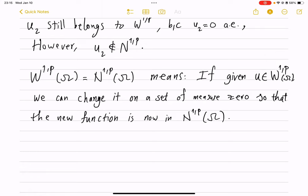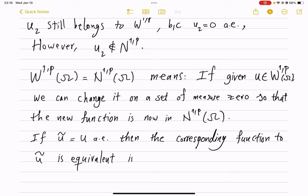And the answer to that is yes. So if u tilde is equal to u almost everywhere, and we choose, we change u tilde on a set of measure zero, then it ends up in N^{1,p}, then the corresponding function to u tilde is equivalent in N^{1,p} omega to that of u.